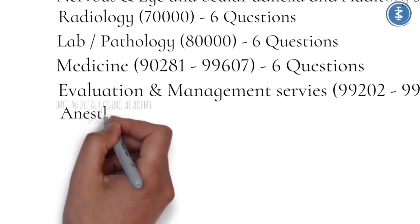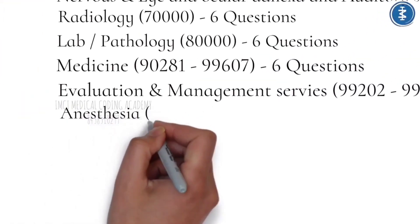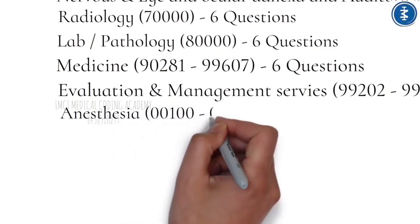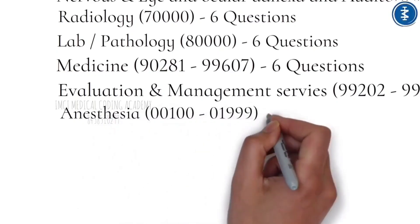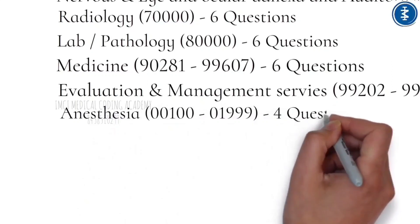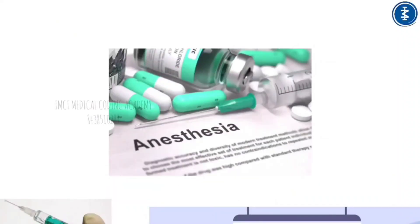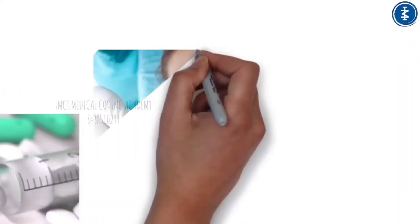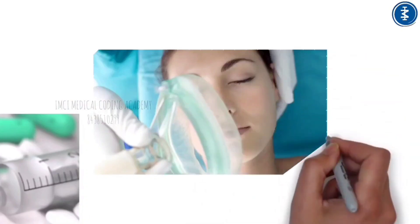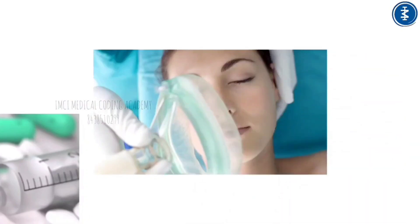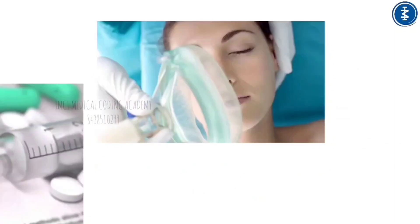The Anesthesia section (Series 0, codes 00100–01999) covers medical treatment that prevents patients from feeling pain during procedures such as surgery, screening and diagnostic tests, tissue sample removal (e.g., skin biopsies), and dental work. It may include analgesia, paralysis, amnesia, and unconsciousness.